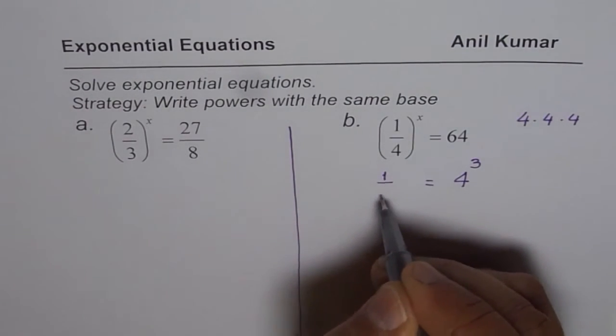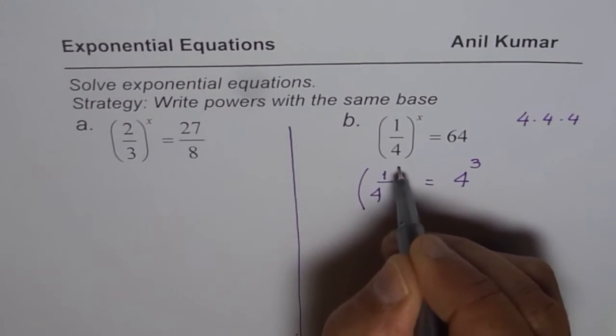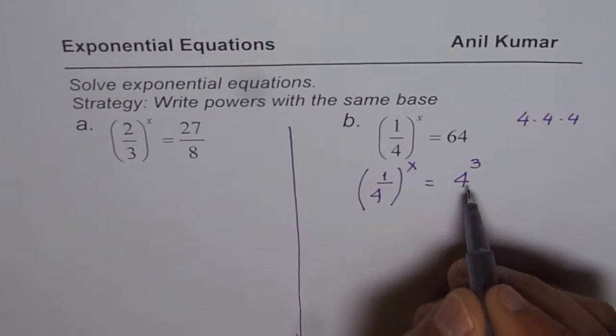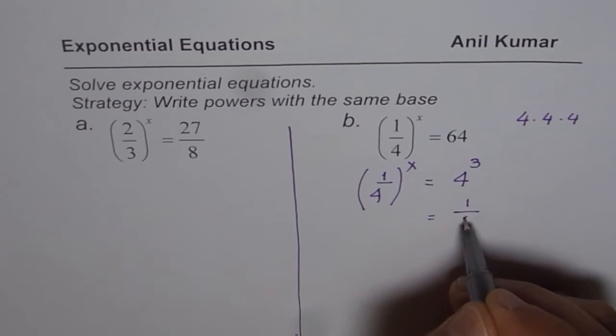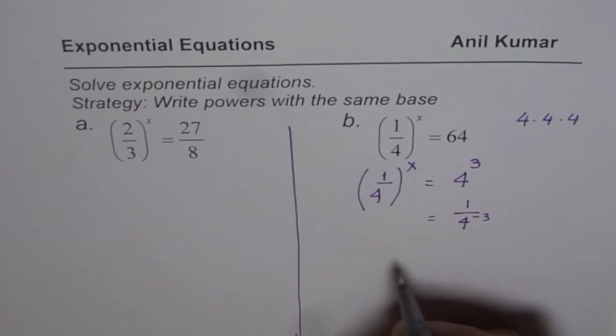And on the left side we have 1 over 4 to the power of x. Now, how can I write this as 1 over 4? We could always do it minus 3, right? So it could be 1 over 4 to the power of minus 3. Is it okay? So that is how we could do it.